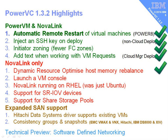NovaLink now runs on Red Hat Enterprise Linux — previously it was Ubuntu only, but most customers who wanted a single Linux flavor in their computer room actually wanted Red Hat. NovaLink is also catching up by now supporting SR-IOV devices available in some Power 8 machines, and also supporting the shared storage pool which PowerVM mode supported but NovaLink did not. On expanded SAN storage, the Hitachi Data Systems driver is now available, and snapshots and consistency groups are supported for EMC, Attache, and certain IBM disk models.